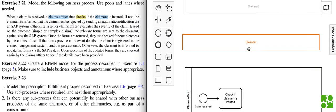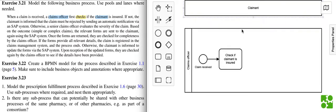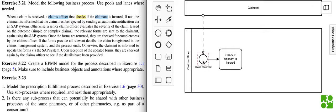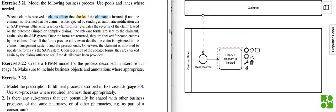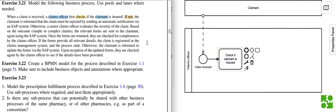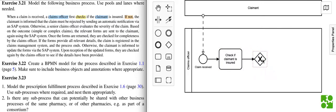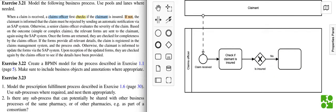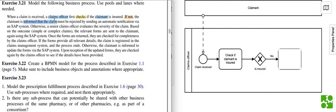The claimant is going to be a black box to us because we cannot control what the claimant does - he's the one that sends the claim. So we check if the claimant is insured. If he is not insured, the claimant is informed and the claim must be rejected.